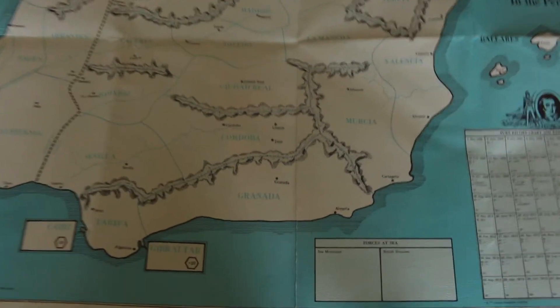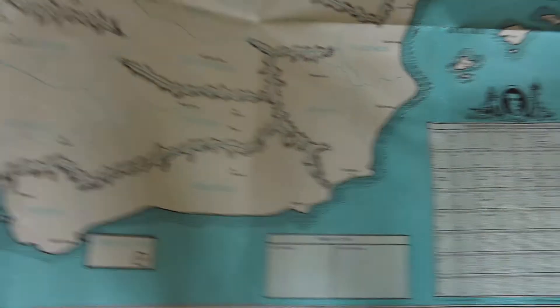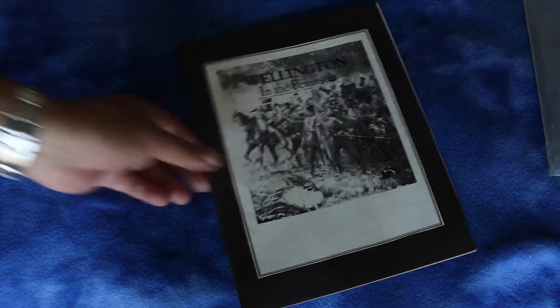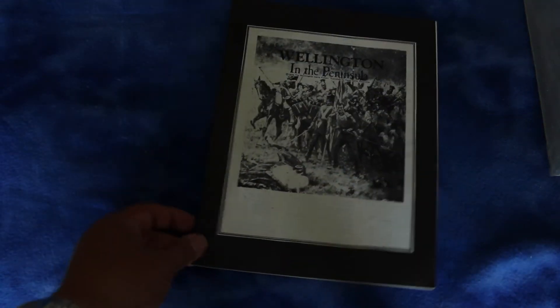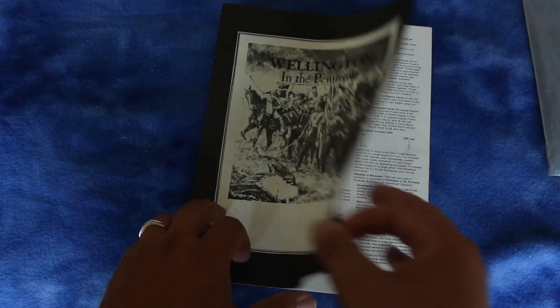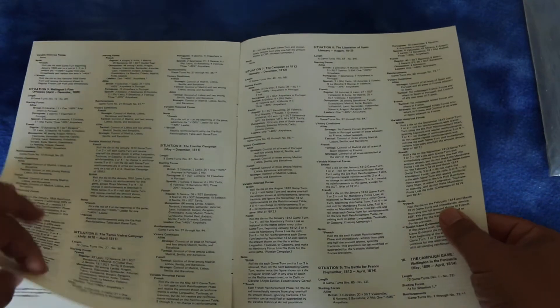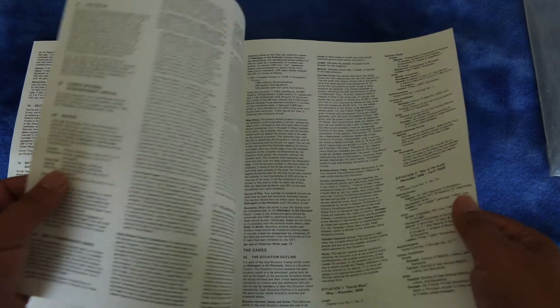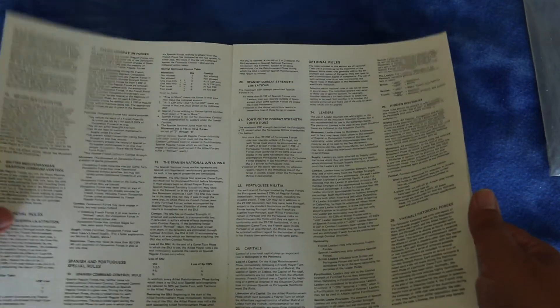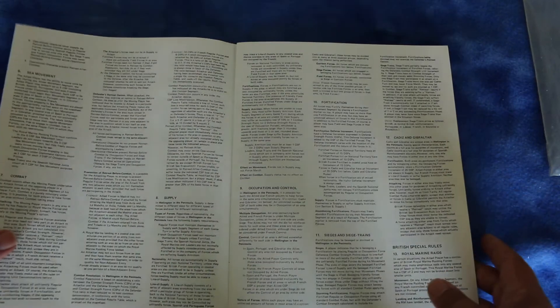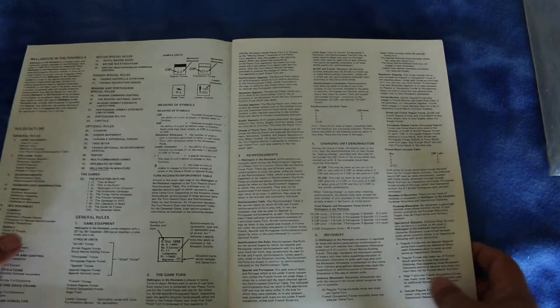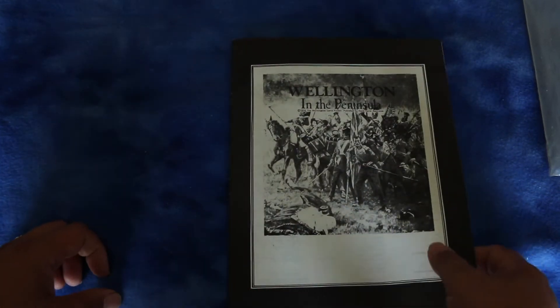Let's see what else is in here. Here's a rule book itself. Let's see how many pages we have. Doesn't have page numbers. Wow.